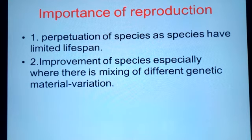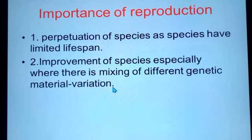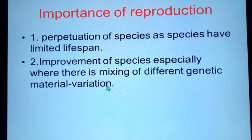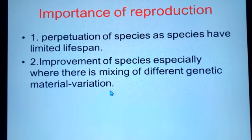Number one: it enables perpetuation of a species. As I was introducing, each species has a limited lifespan — that means the organism does not live on and on. There are times that the organism's lifespan comes to an end, and therefore it must be replaced. So the process of replacing the organism is reproduction.